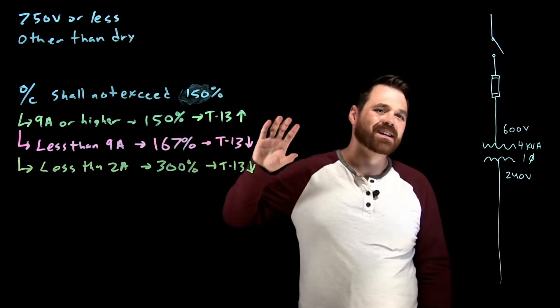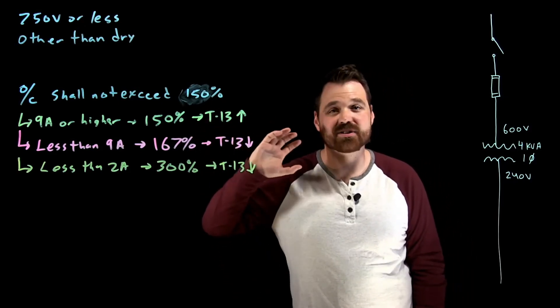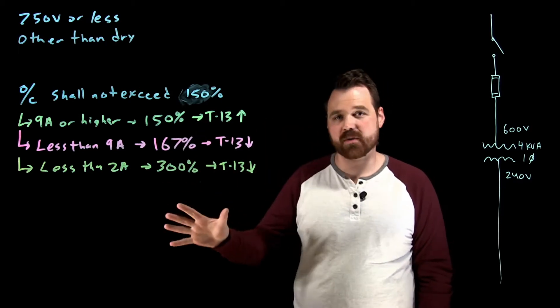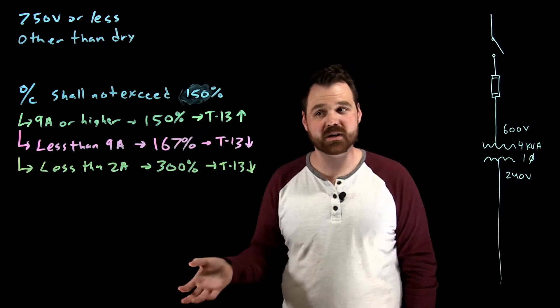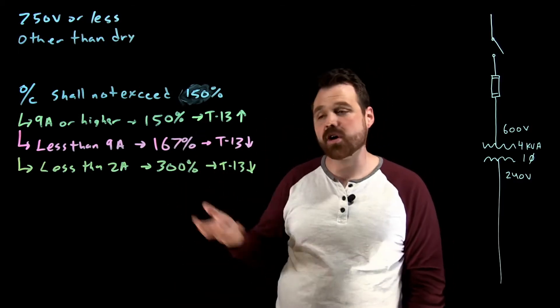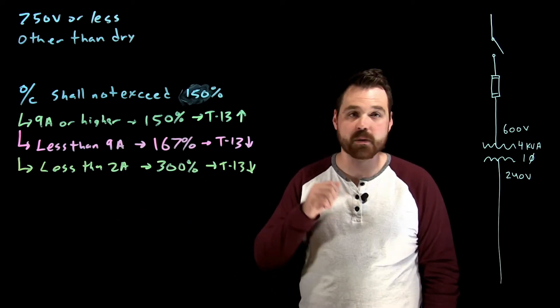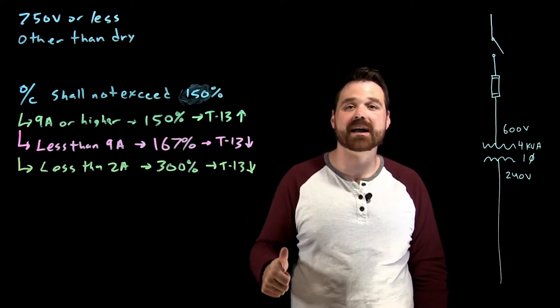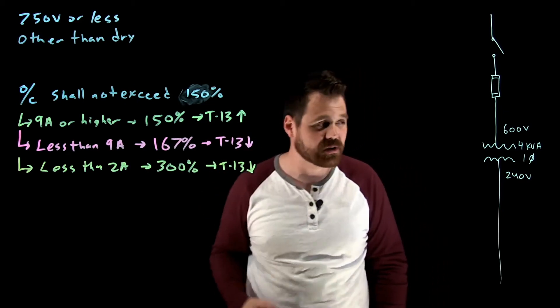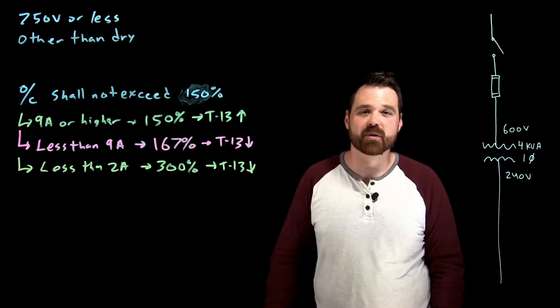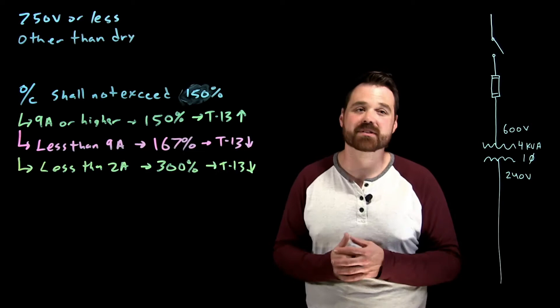And table 13 is just a reference for pretending those are all my overcurrent devices that are available. If you go to the store and they say we actually have a 37.5 amp fuse, perfect, you're good to go. This is just pretending table 13 is the shelf at my store and that's what's available.